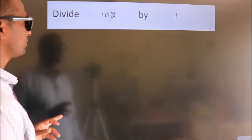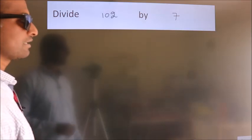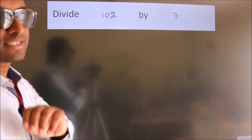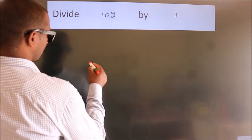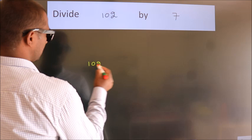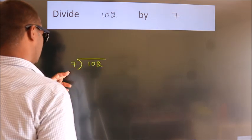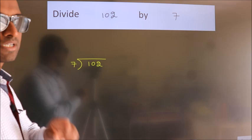Divide 102 by 7. To do this division, we should frame it in this way: 102 here, 7 here. This is your step 1.